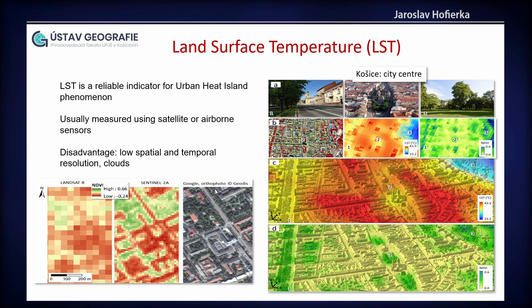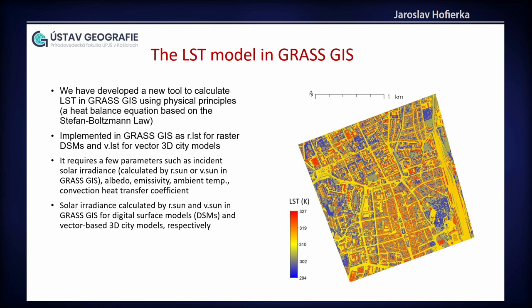The problem is that these sensors have quite rough spatial and temporal resolution, and sometimes even clouds can pose an obstacle to sense or measure this data. So we developed a new tool to calculate LST in GRASS GIS using physical principles, and it is implemented as r.LST for raster data and V.LST for vector 3D models.